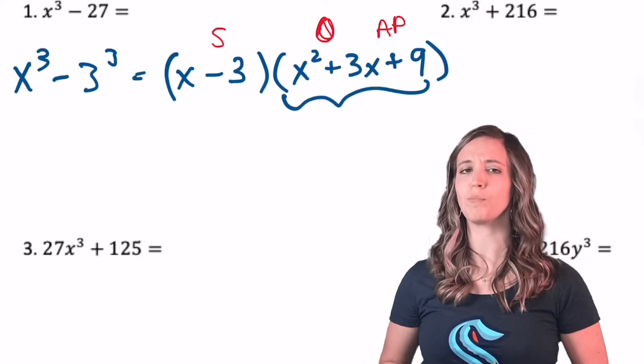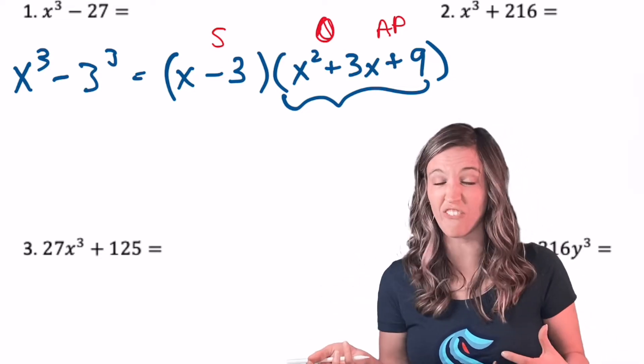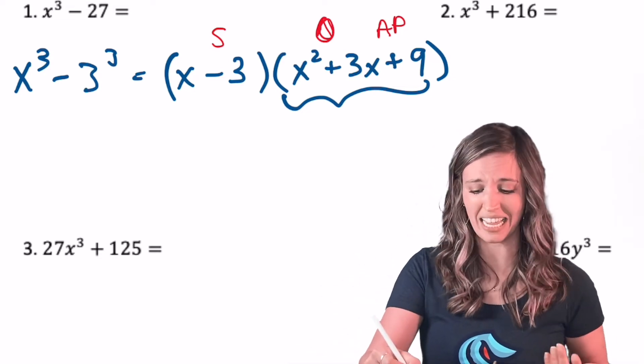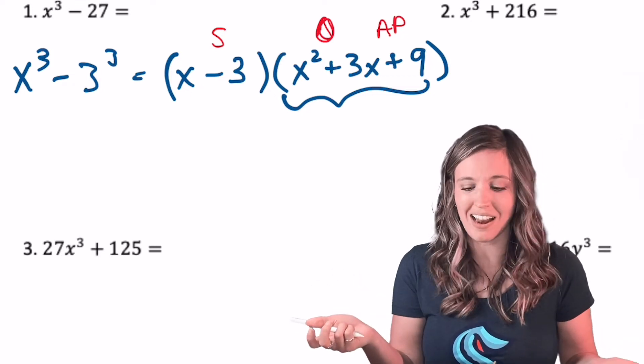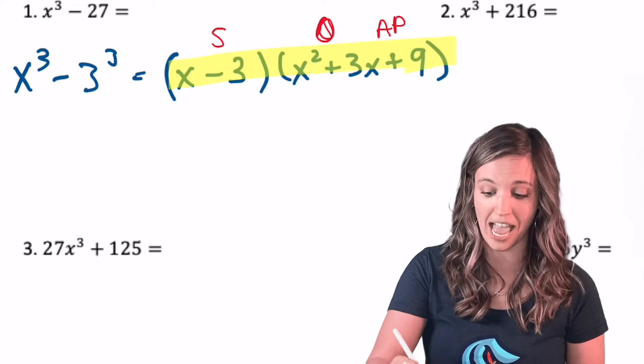Now I know if you look at this, x squared plus three x plus nine, I see a quadratic there, and I'm like, maybe I could still factor that. Well, multiplies to nine and adds to three, nothing multiplies to nine and adds to three. So this is officially fully factored. I can't factor it any further.